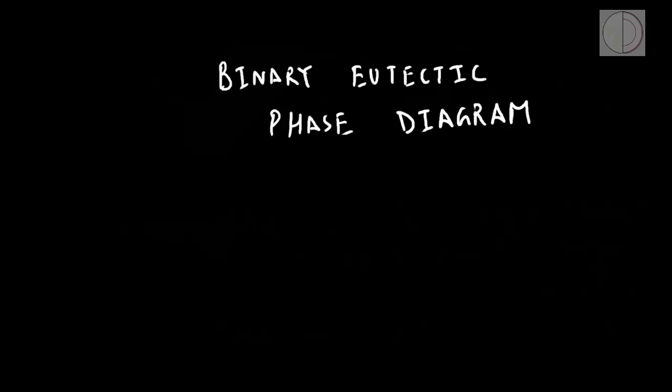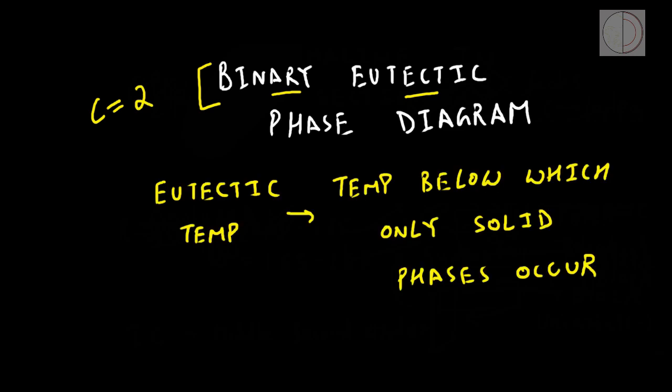In this video, we will be talking about the binary eutectic phase diagrams. There are two things that we need to clarify first. The term binary symbolizes that in the system the number of components is 2. The term eutectic defines the eutectic temperature, that is the temperature below which everything in the system is in the solid phase.